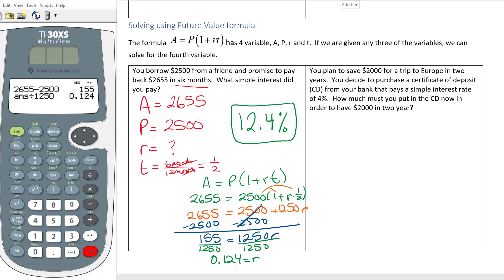Next one. You plan to save $2,000 for a trip to Europe in two years. You decide to purchase a certificate of deposit, a CD, from your bank that pays a simple interest rate of 4%. How much must you put in the CD now in order to have $2,000 in two years? I'm going to list my letters A, P, R, and T. I'm going to read it again. You plan to save $2,000 for a trip. Do you have $2,000 right now? No. So that's going to be your future value.